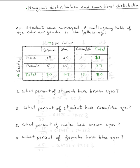Now let's answer the question: what percent of students have brown eyes? The total number of students is 80, so 80 always goes in the denominator — whatever comes after 'of' goes in the denominator. How many brown eyes do we have? 20. So you do 20 over 80, which equals 0.25, or 25%. You just move the decimal two places to the right.